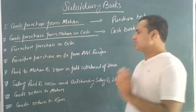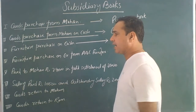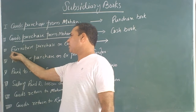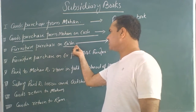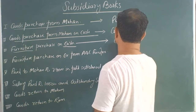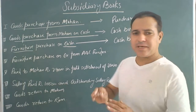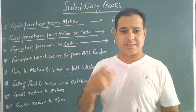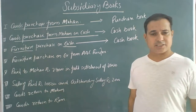The next transaction is furniture purchased for cash. Here we have purchased furniture, not goods, and it is purchased in cash, so it will go to the cash book. Whenever we make any payment or receive any payment in cash, it will always go to the cash book.